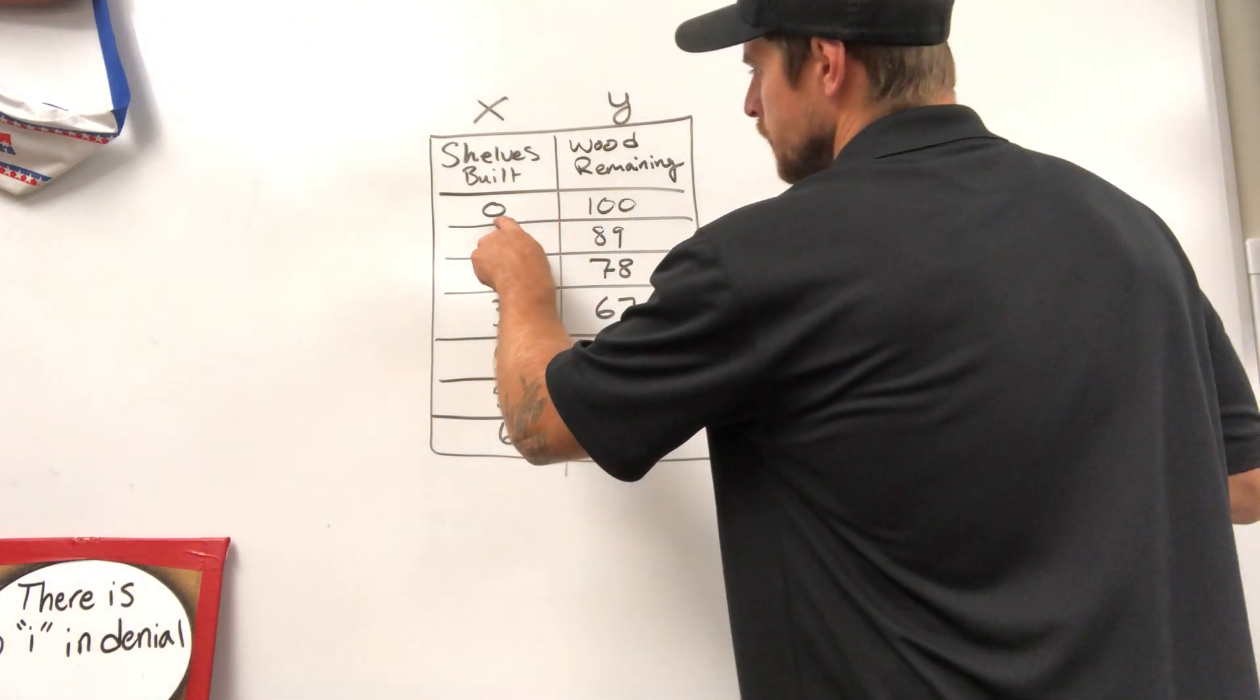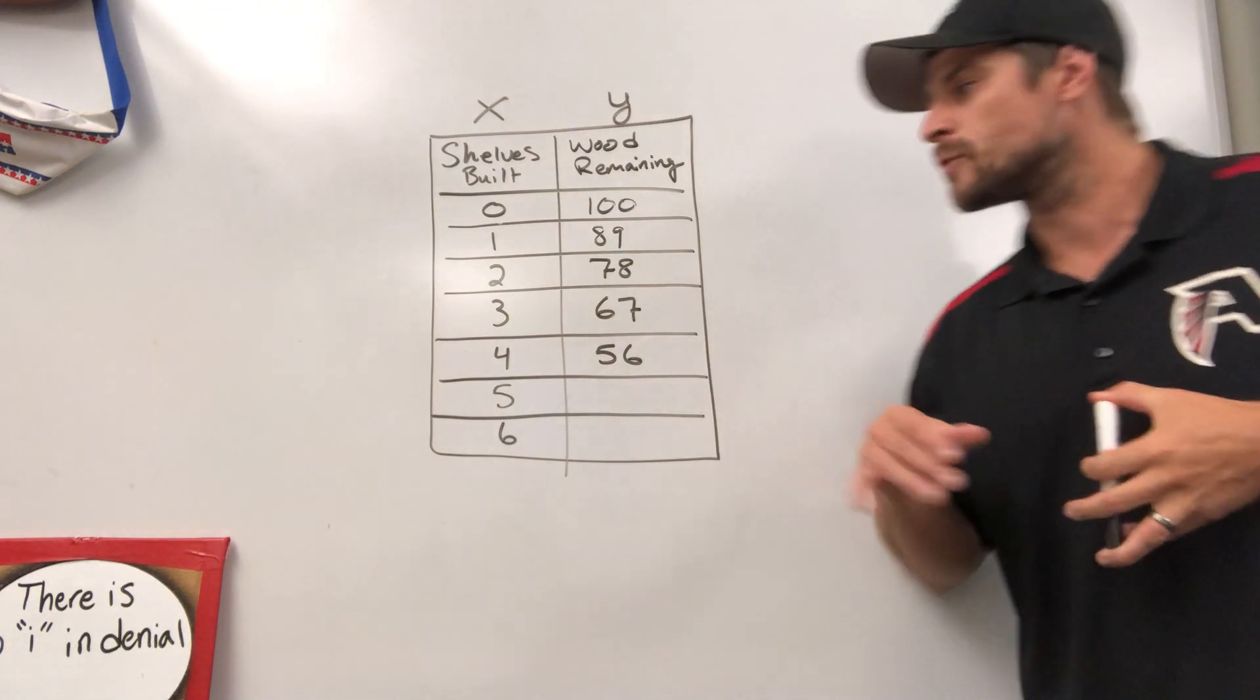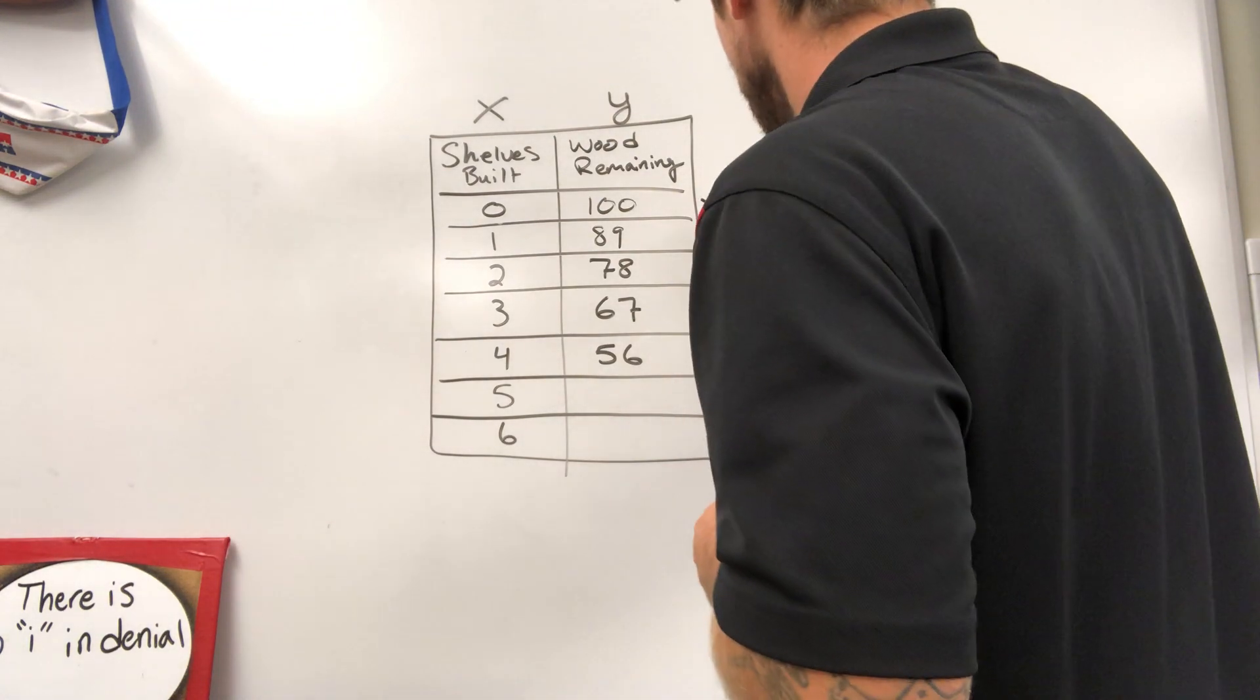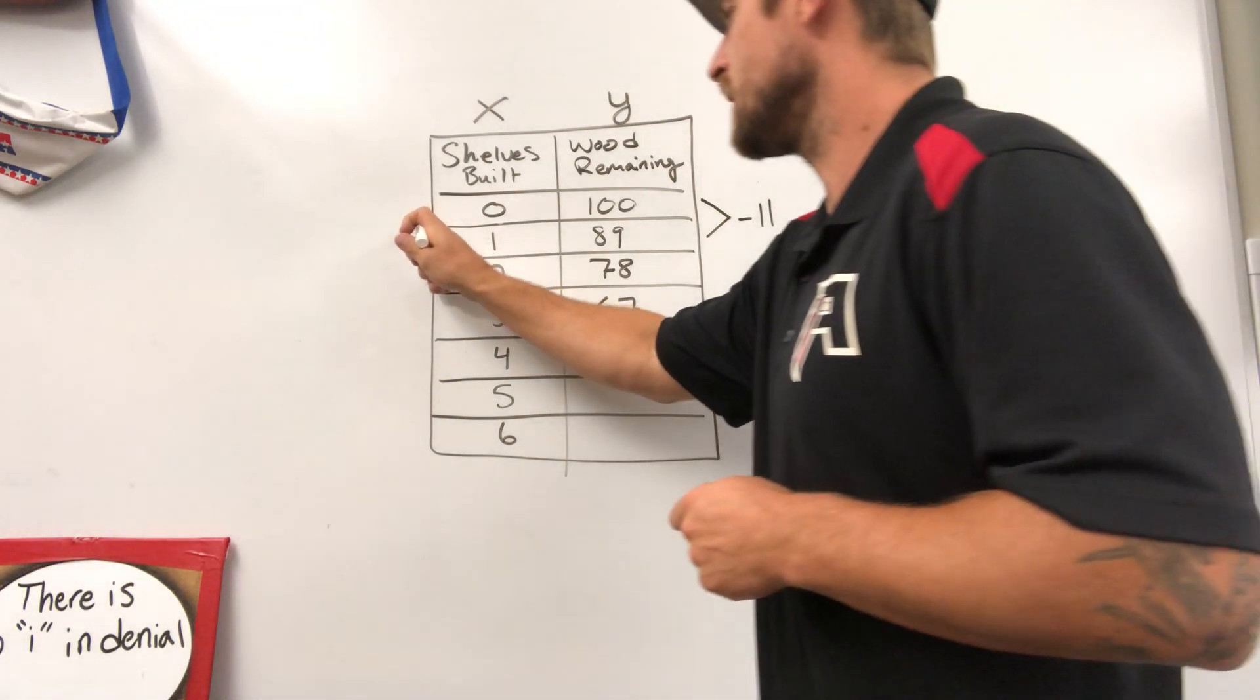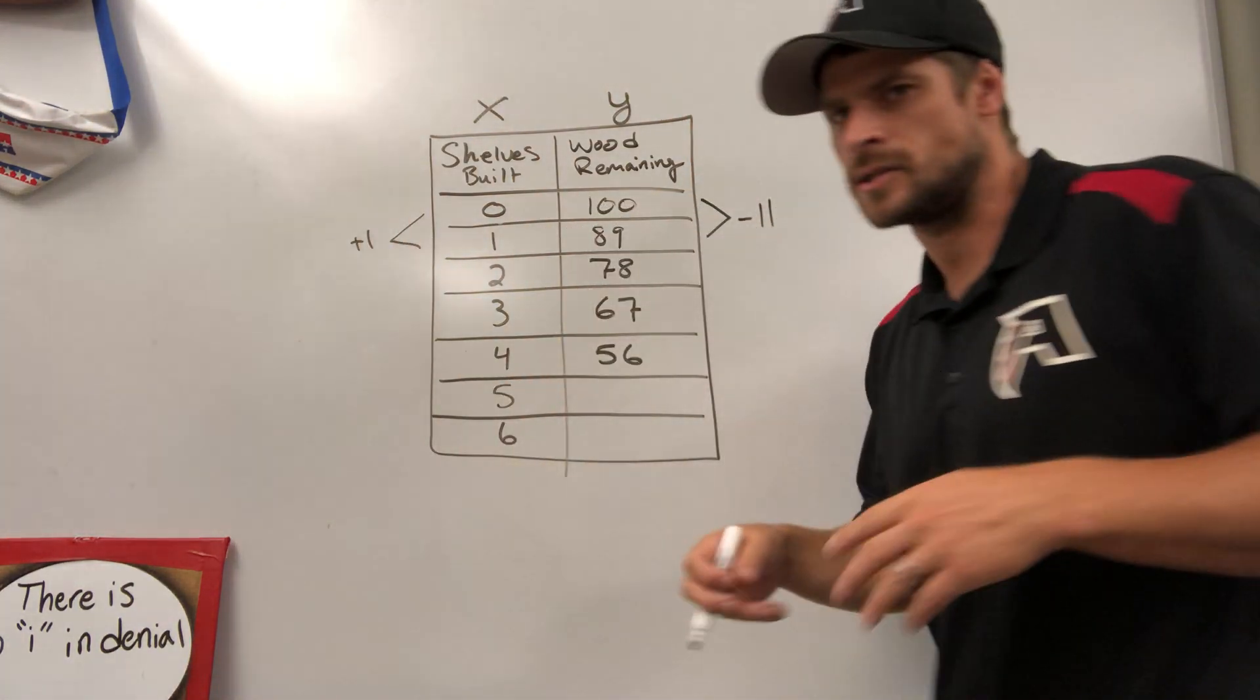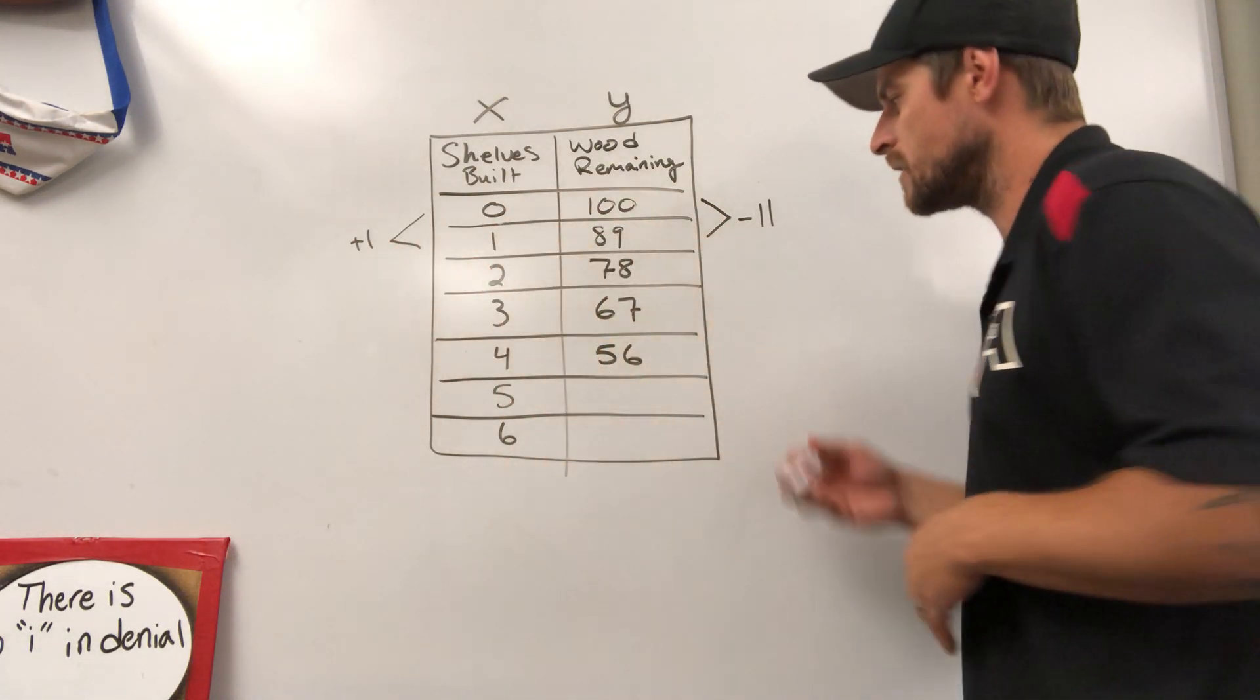So zero shelves have been built. It looks like we have 100 pieces of wood remaining. After we build our first shelf, now we only have 89 pieces of wood remaining. Therefore, our wood remaining is dropping 11 pieces every shelf that we build. So we're going to take our change in Y and our change in X to determine what our rate of change is. Change in Y over change in X is how we get our rate of change.